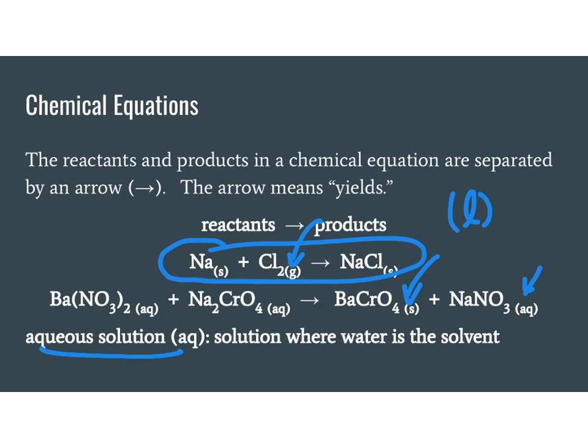You might also see any number of things written up above the yield sign. A specific temperature, a pressure, if a catalyst was used or if the reaction was heated, maybe just the word heat. Instead of the word heat, sometimes you might see a little triangle. That means that the reaction was heated.